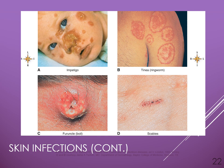In these pictures: the top left shows impetigo, the bottom left shows a furuncle, the top right shows tinea — also referred to as ringworm — and the bottom right is scabies.